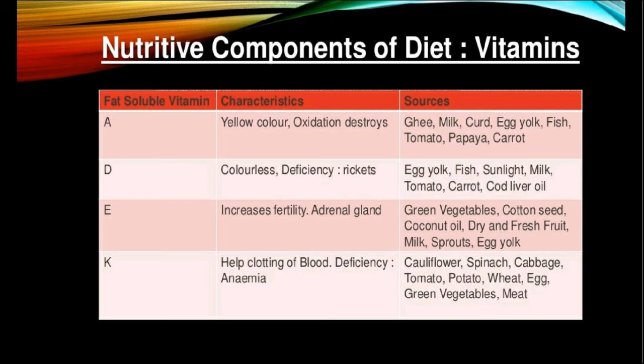There are two types of vitamins: fat-soluble vitamins and water-soluble vitamins. Fat-soluble vitamins constitute vitamin A, vitamin D, vitamin E and vitamin K.